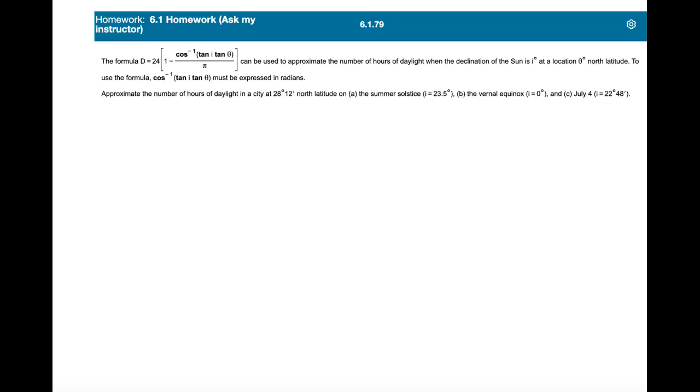Okay, now in this problem, we're given a formula D that's used to approximate the number of hours of daylight, and in this formula we have two variables we're going to consider.